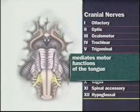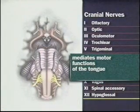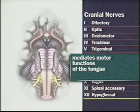Cranial nerve 12, the hypoglossal nerve, mediates motor functions of the tongue, which in turn affect articulation of words. Inspect the patient's tongue as it lies on the floor of his mouth and observe for fasciculations — there should be none.